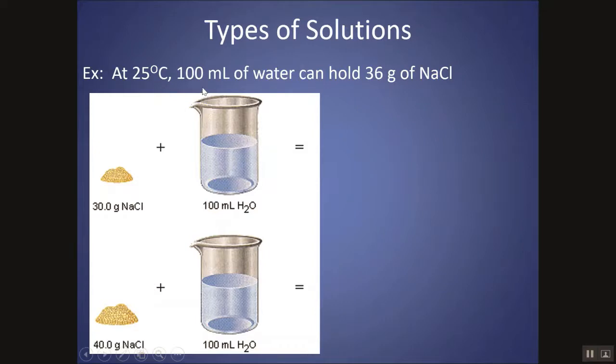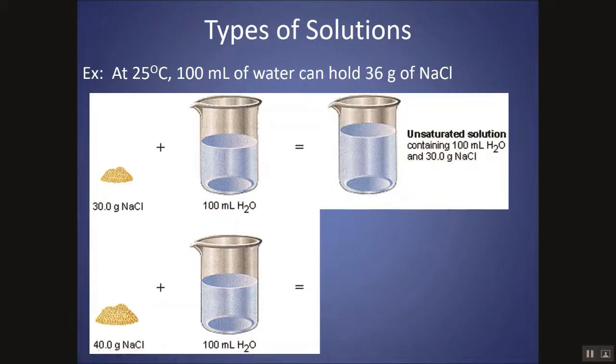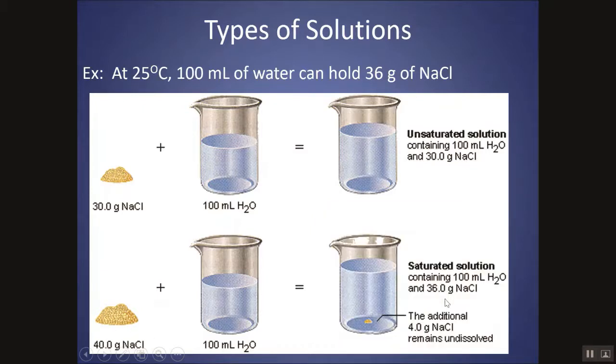So as I tell you 100 milliliters of water can hold 36 grams of NaCl. If I were to dissolve 30 grams of NaCl, it would all dissolve and form an unsaturated solution. You have less than the maximum. If I were to try to dissolve 40 grams, only 36 grams of it would dissolve and form a saturated solution. That's the maximum possible, and the 4 additional grams of NaCl would remain undissolved at the bottom.